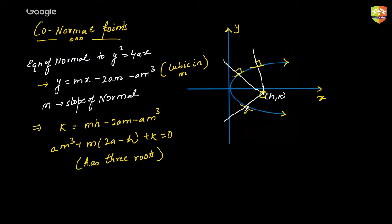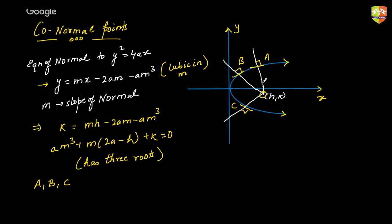Let me tell you these three may not all be real. You may have all three real, or you may have one real and two imaginary. Now, what are co-normal points? Co-normal points are nothing but these points A, B, and C, which are the feet of the normals drawn from the external point P onto the parabola. A, B, C are called the co-normal points.